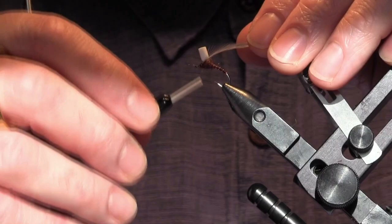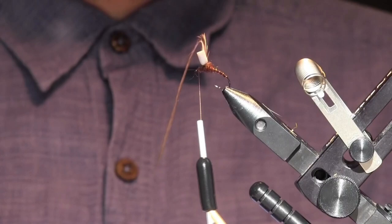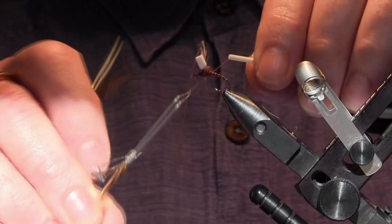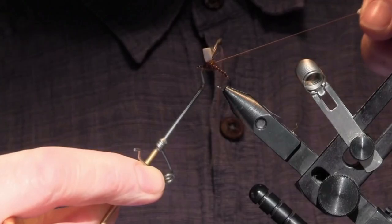Basically the body of our fly is done now. So what we're gonna do is throw some half hitches in there to create a little head. One, two, three, four. There we go, pull tight.